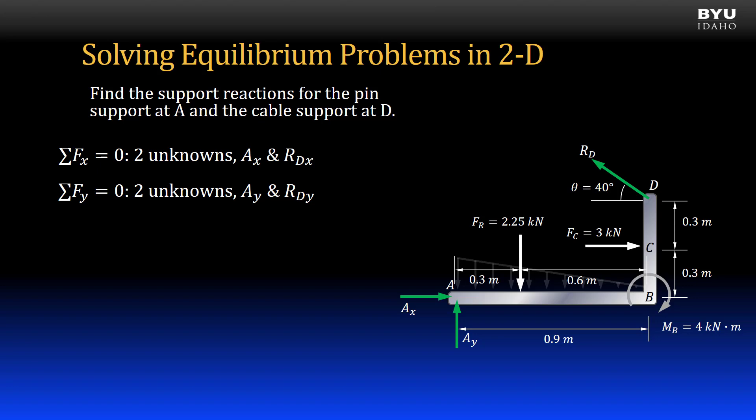I can also sum forces in the y direction to zero. Again, I will have two unknowns in the equation, Ay and the vertical component of RD. Now I will consider good points to sum moments to zero. Remember that I can sum moments to zero anywhere I want, but I can be strategic about it and possibly find a point that will minimize the unknown variables.